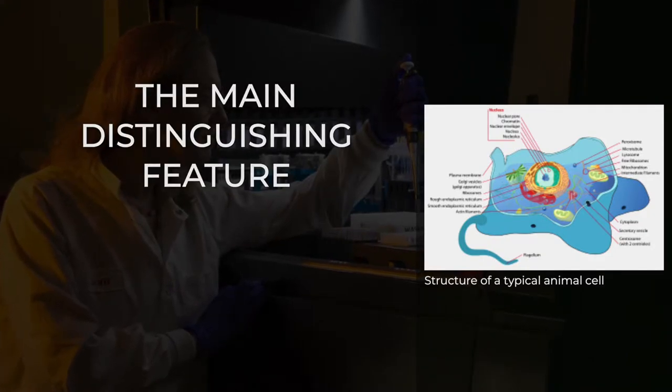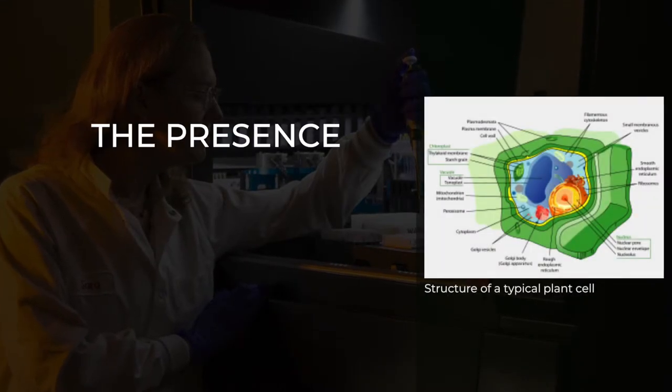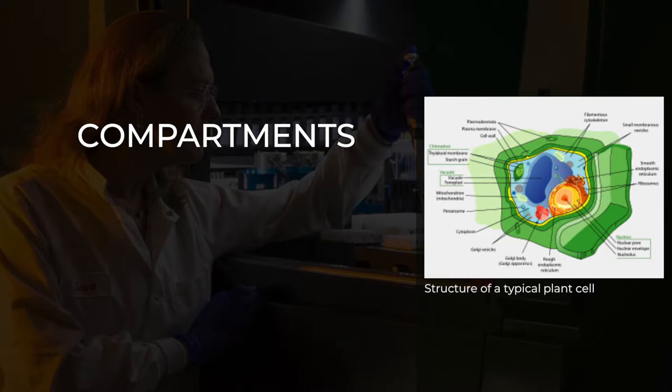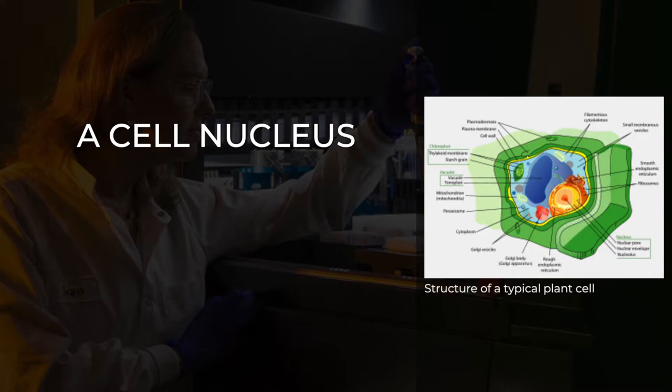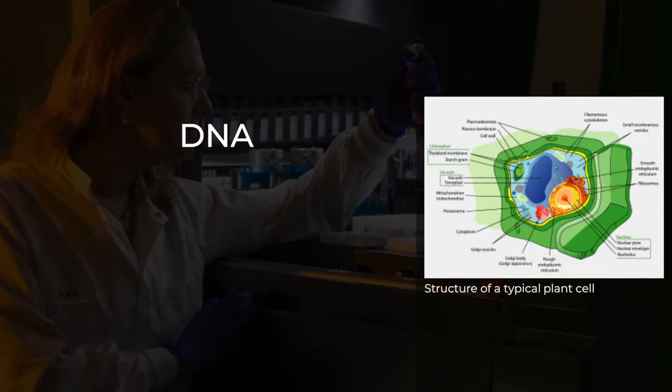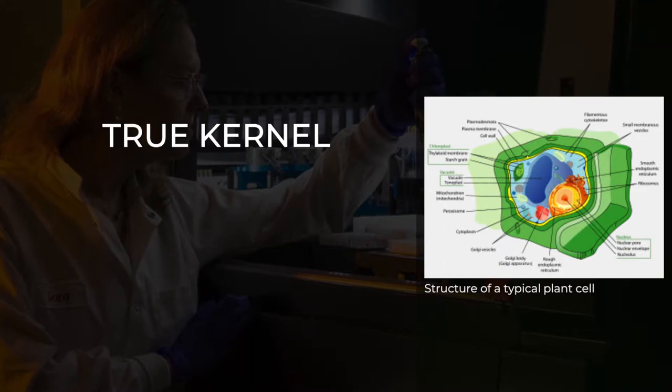The main distinguishing feature of eukaryotes as compared to prokaryotes is compartmentalization, the presence of membrane-bound organelles or compartments in which specific activities take place. Most important among these is a cell nucleus, an organelle that houses the cell's DNA. This nucleus gives the eukaryote its name, which means true kernel nucleus.